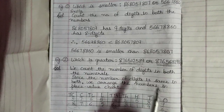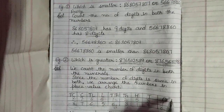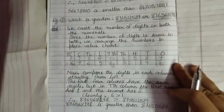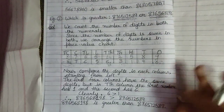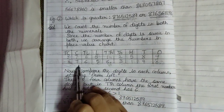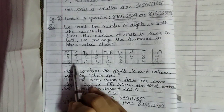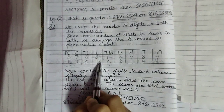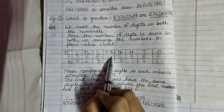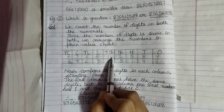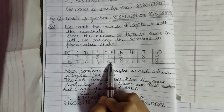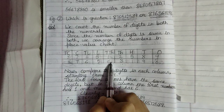Since the number of digits is the same in both, we will make a place value chart and compare each column. On comparing the first four columns, I observe that they have the same numbers. So I will move on to the fifth column — the column of 10,000 — where I have 1 and 6. Since 6 is greater than 1,